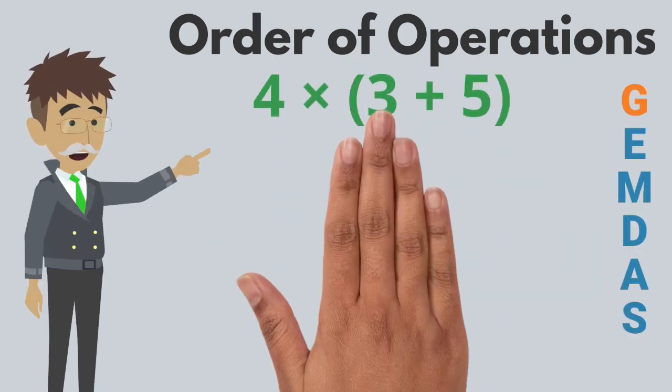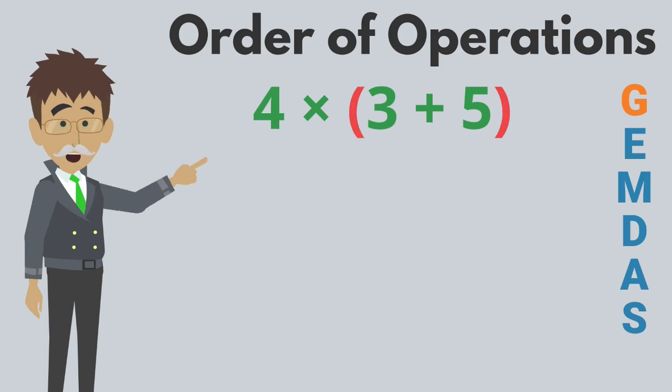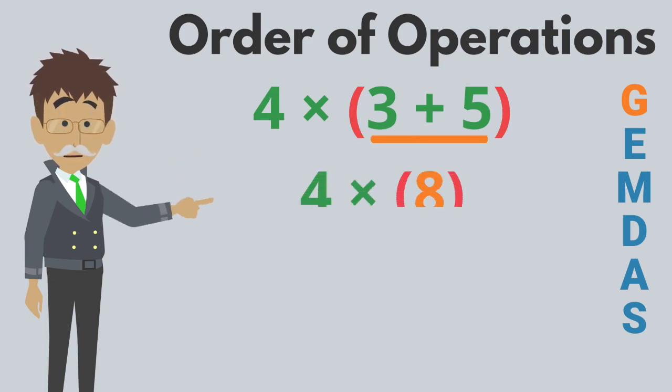First, we tackle what's inside parentheses, the grouping symbols. So, in 4 times the quantity 3 plus 5, we first add inside the parentheses to get 4 times 8.